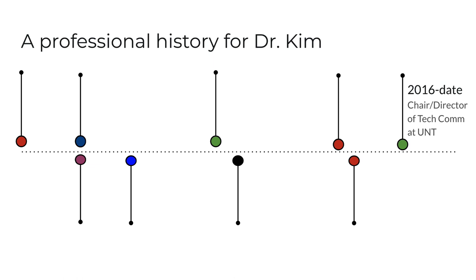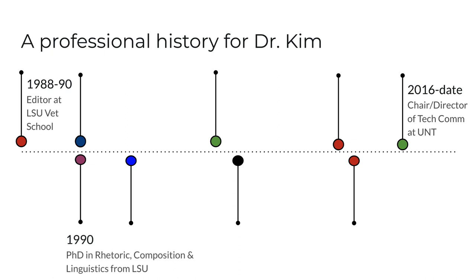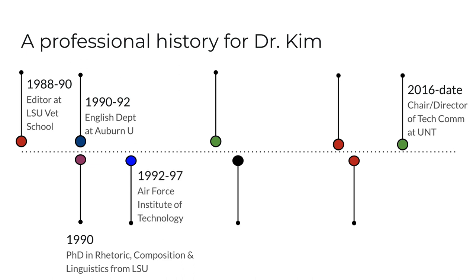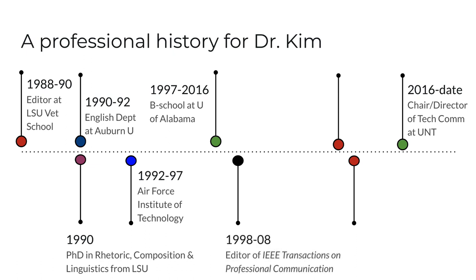Back to my brief professional history leading up to 2016. My passion for language eventually led me to grad school to study linguistics and tech writing. While I was in school in the late 80s, I worked as a tech editor. I earned my PhD from LSU in 1990 after completing my dissertation research on applications of linguistics to professional writing. My first job as a professor was in the English department at Auburn University. In 1992, I began work as a professor and researcher at the Air Force's postgraduate school. Then in 1997, I joined the business school at the University of Alabama, where I stayed for 19 years. During that time, I also served as editor of the IEEE Transactions on Professional Communication for more than 10 years, and at Bama I also held some administrative positions.